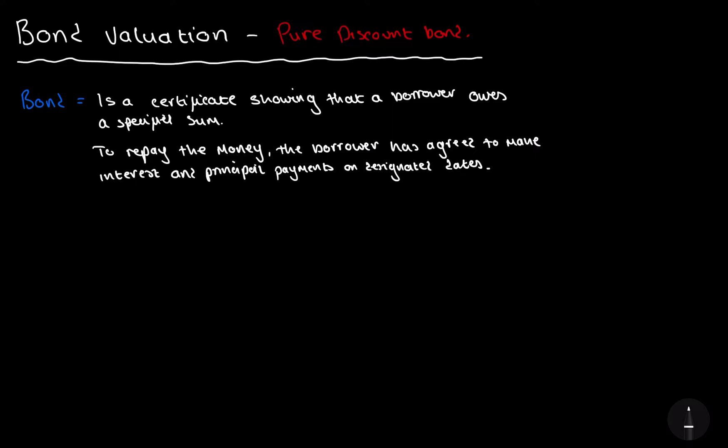I'm starting a new series where I'm going to be talking about the three types of bond: pure discount bond, console bond, and level coupon bond. And today what I'm going to be doing is talking about the pure discount bond. So be sure to check out the other videos that I do.